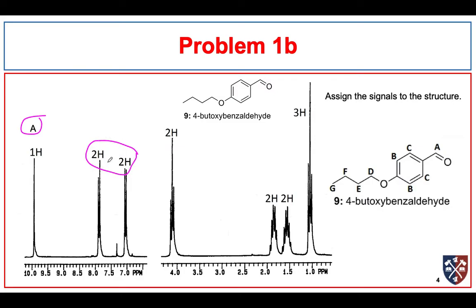Four protons in the aromatic region tells us we have a para-substituted aromatic group. B will be furthest downfield and C will be less downfield. Proton D we expect to be somewhere around 4 ppm, and it's a triplet because it only has two protons on the carbon next to it — and here we can see that triplet right around 4 ppm.